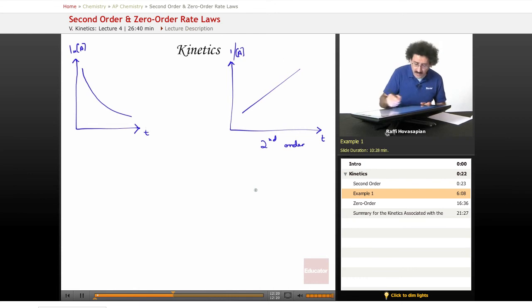So we can go ahead and write the differential rate law. Minus d[C4H6]/dt equals the constant times [C4H6] to the second power. We know it. Now it's a second power. We derived it from the graph. So we have an order of 2.